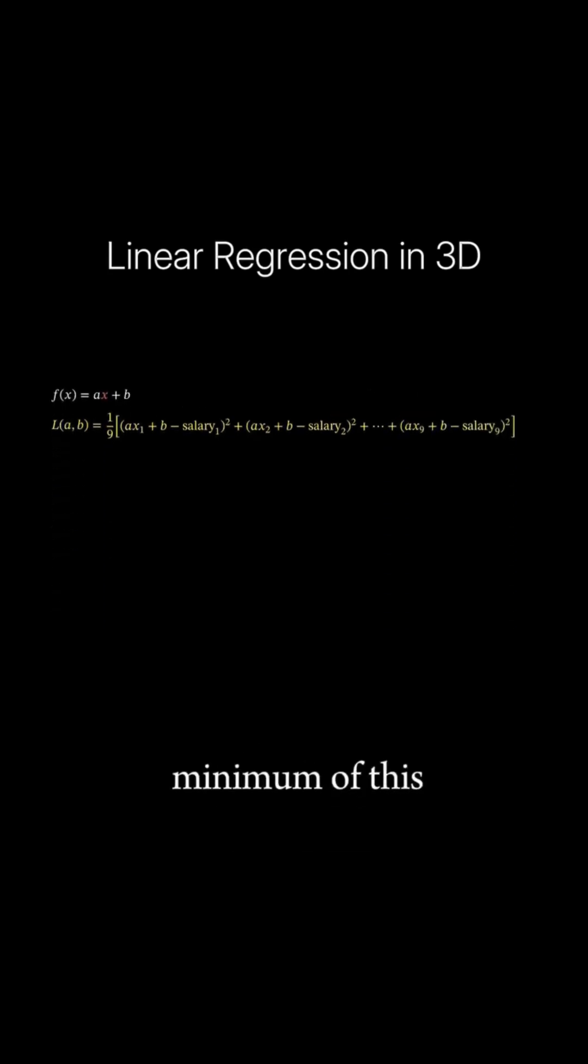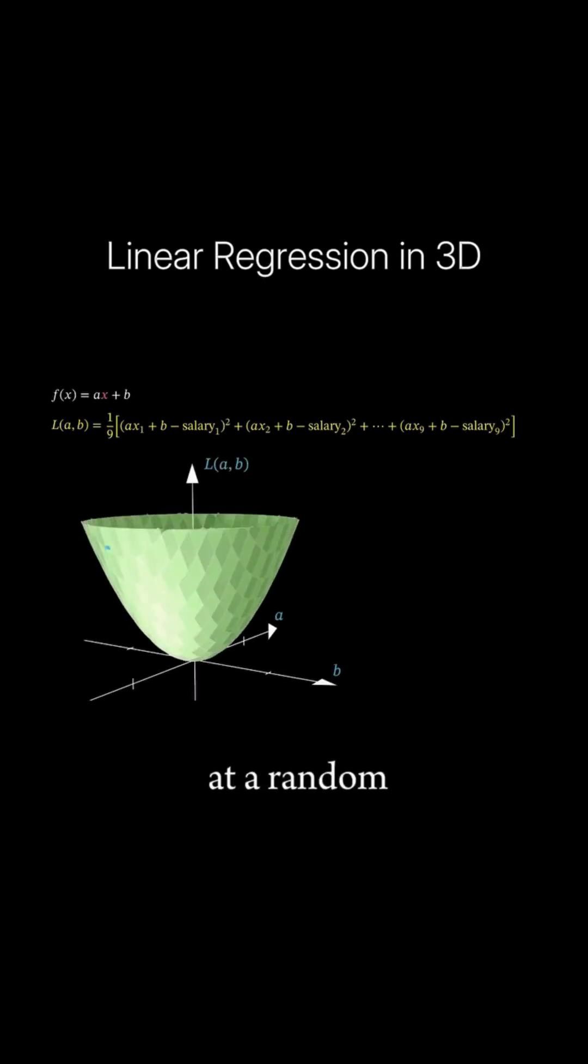To find the minimum of this function, you can use the algorithm called gradient descent. The idea is simple: you start at a random point and then you keep moving in the direction that decreases the function the fastest.